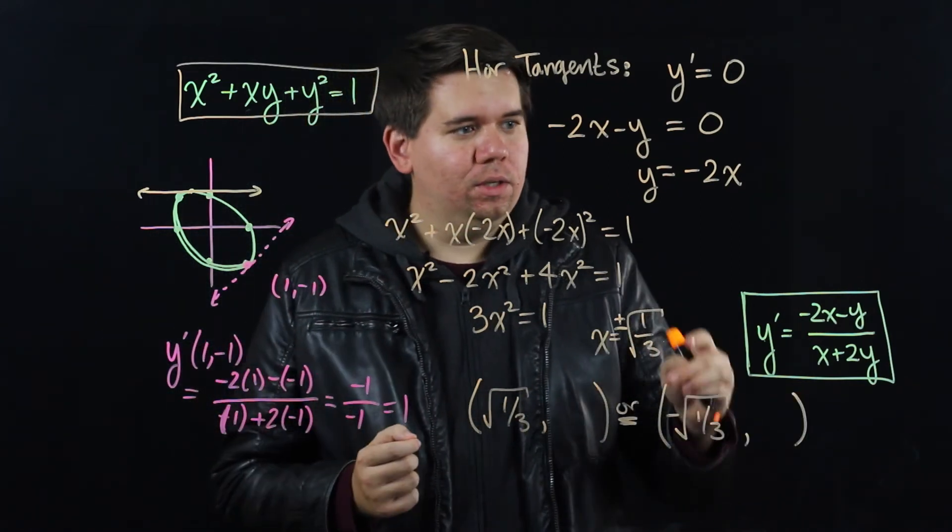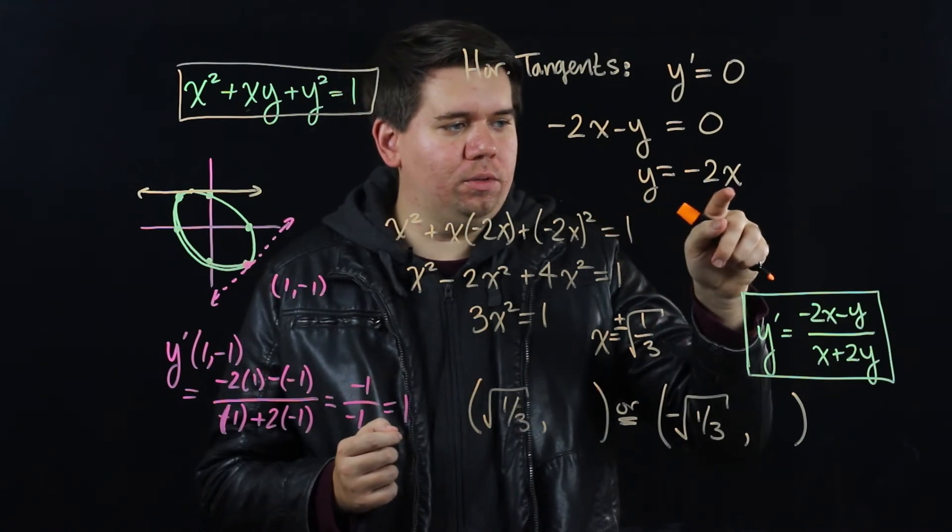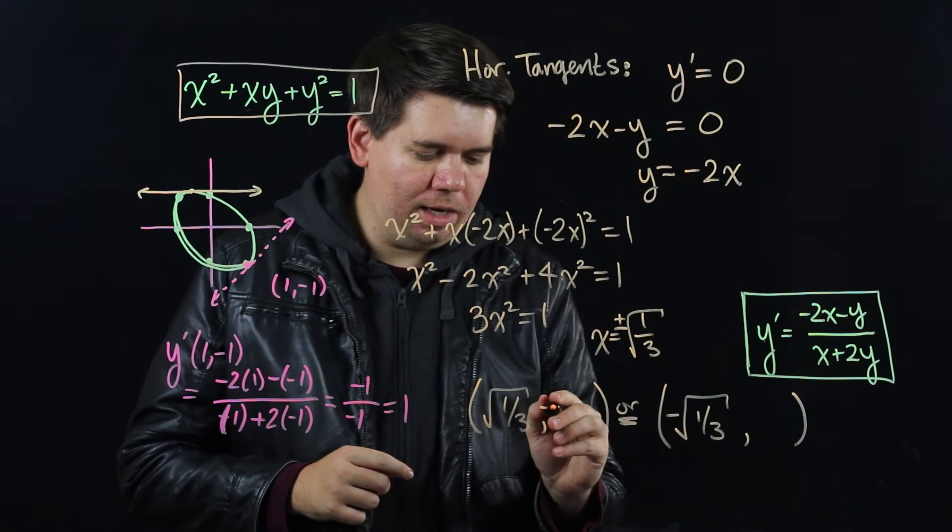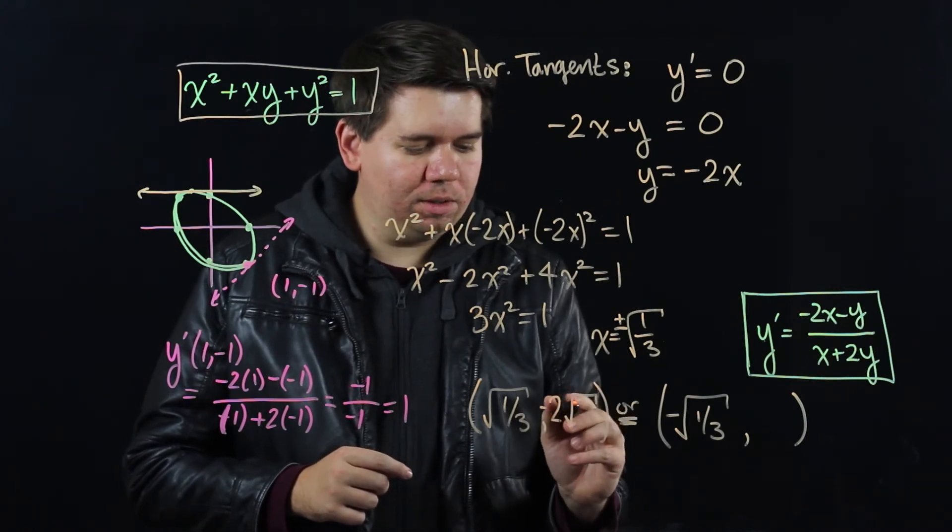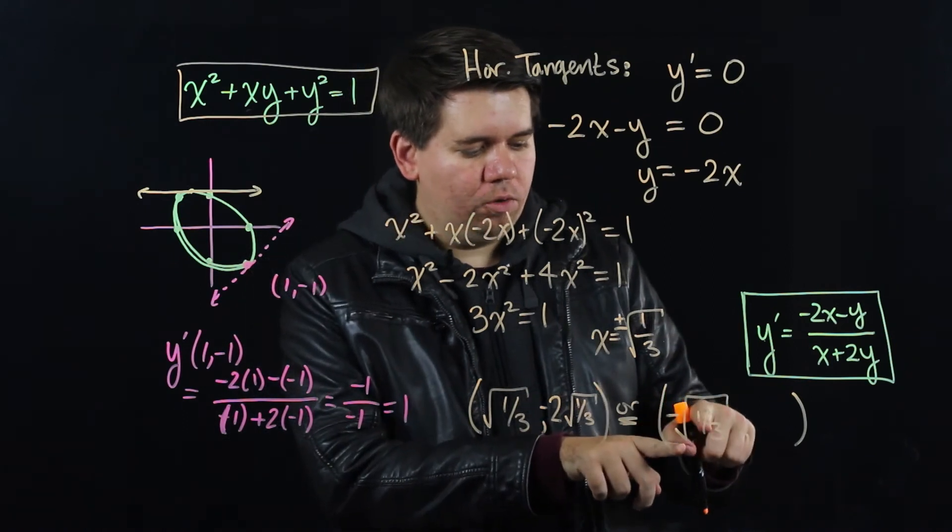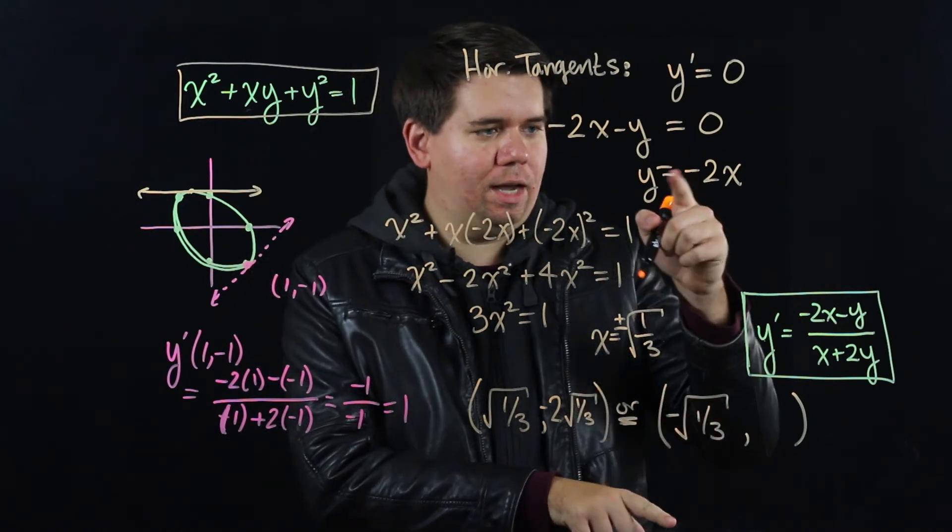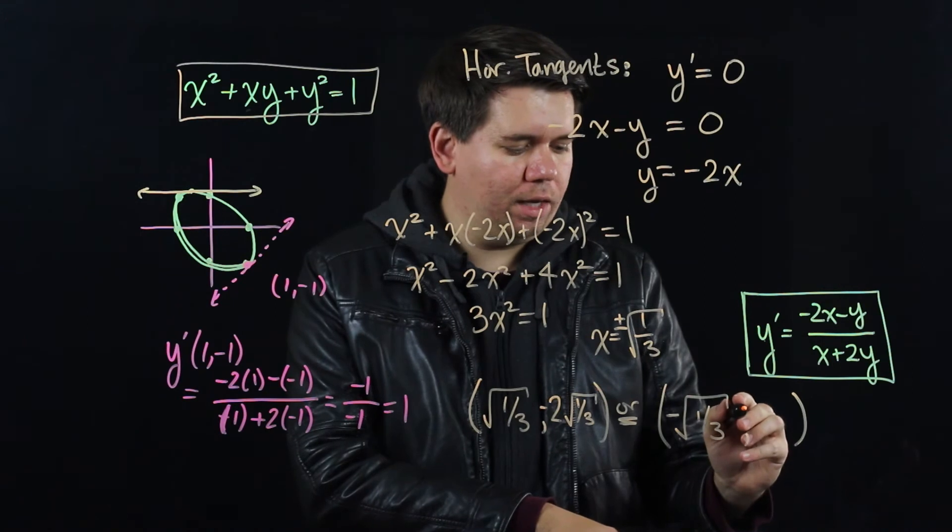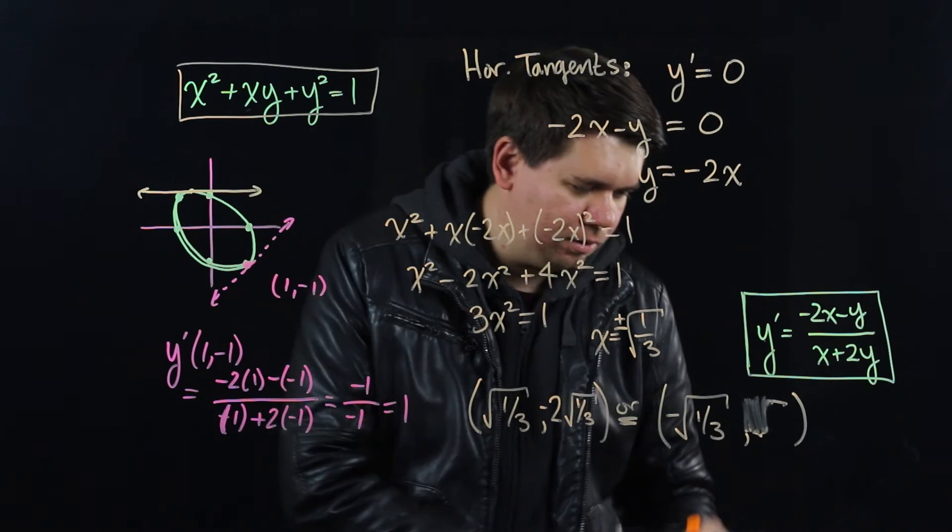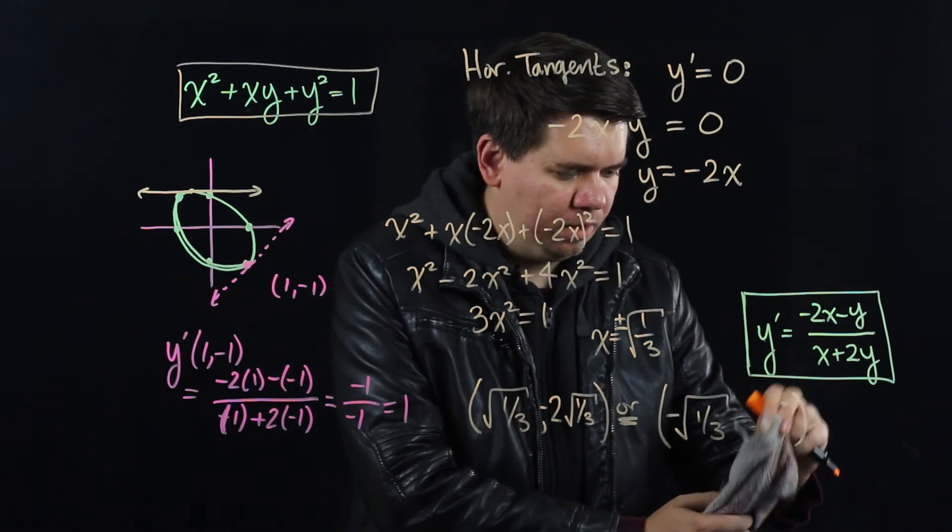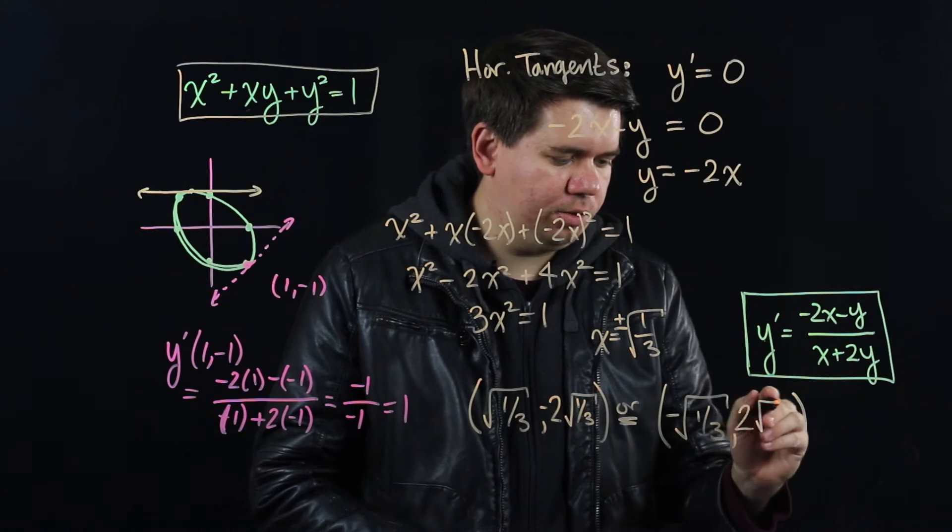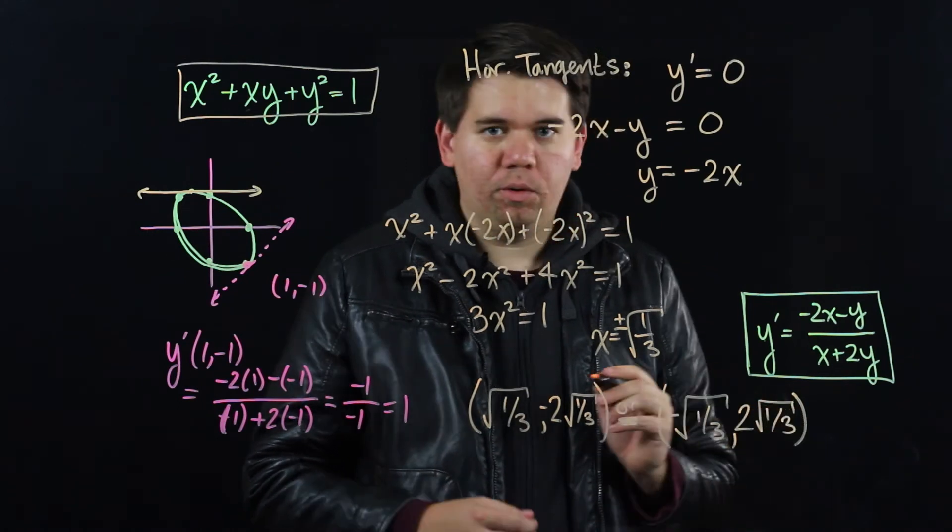What are my y values? Well, y is just negative 2 times whatever your x is. So if x is the square root of 1 third, your y is negative 2 times the square root of 1 third. And if x is negative square root of 1 third, then times by negative 2, you get for your y, 2 times the square root. So this is 2 times, write that nice and big. This is 2 times the square root of 1 third.